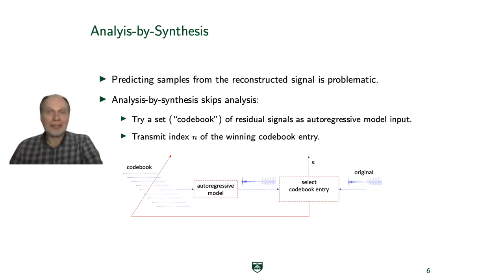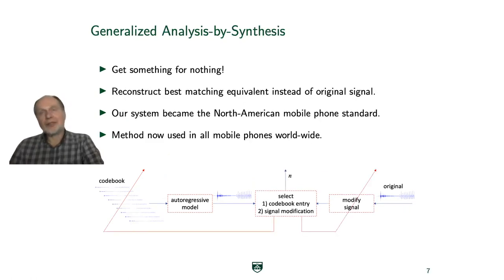We transmit the index for the best one and at the decoder we simply push that codebook entry through the autoregressive model to get the reconstructed speech signal. We can do better by adding yet another stage. We don't try to match the original signal but opportunistically the best matching modified signal from a set that sound the same. We invented this trick in the 1990s and that coder became the North American mobile phone standard.